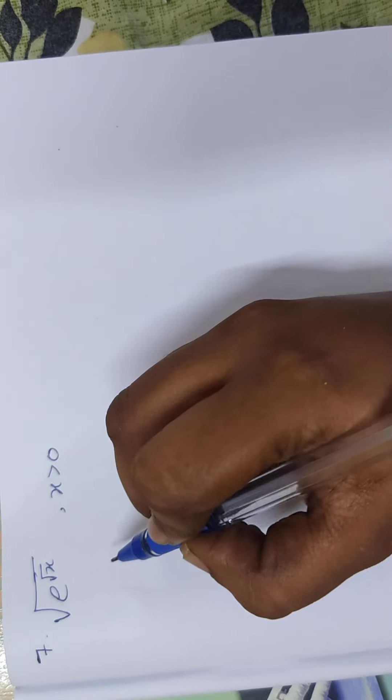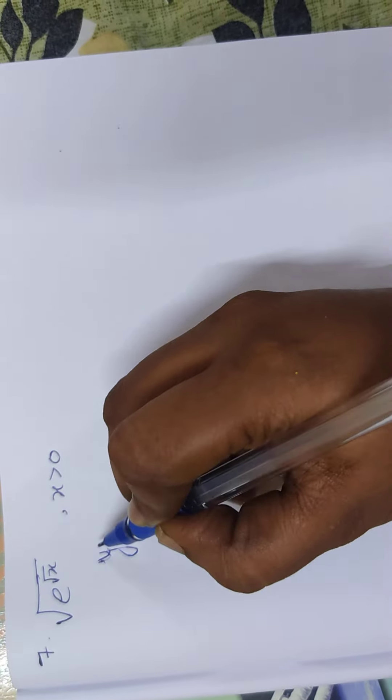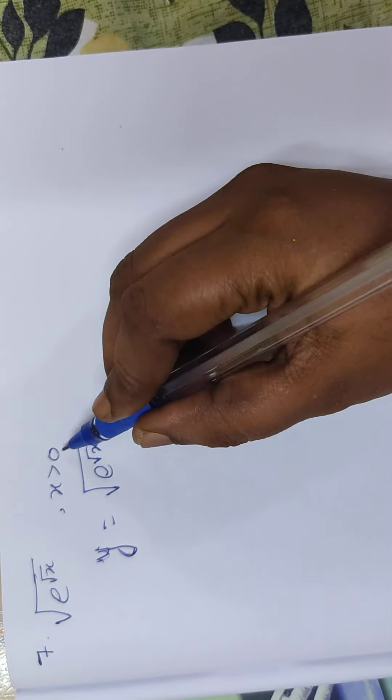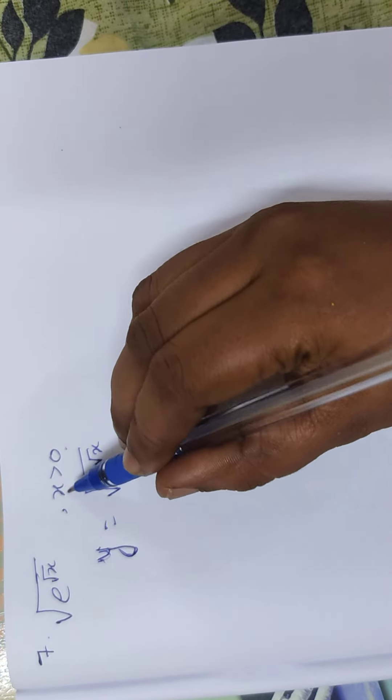So what we do is, in the next function, y is equal to square root of e power root x. And here, one condition we get. How do we get x value greater than 0? x value positive.